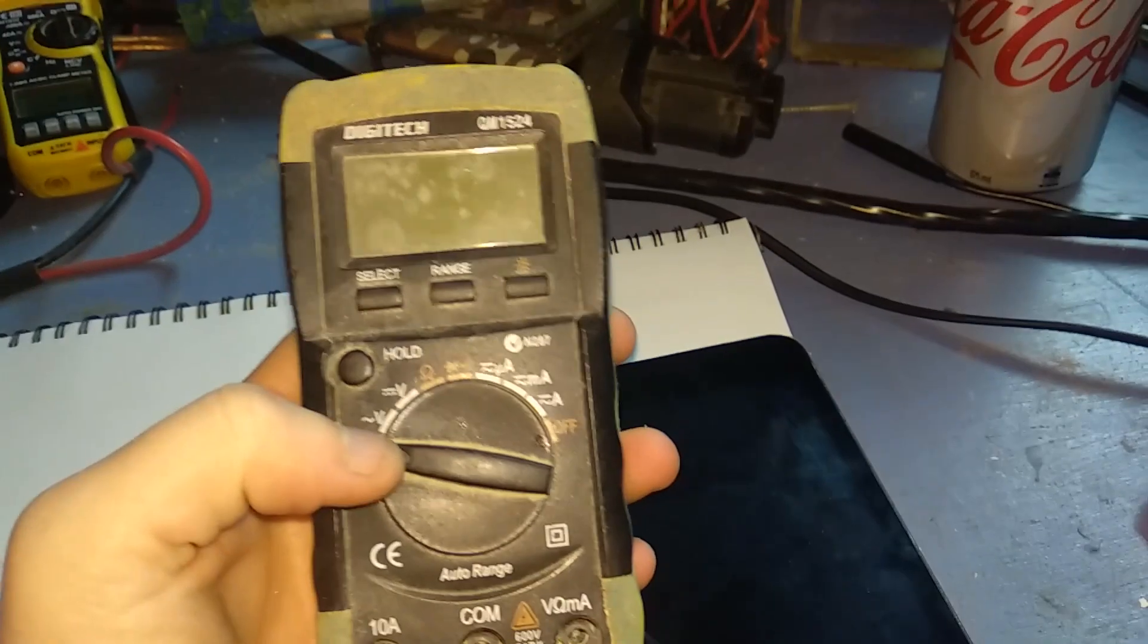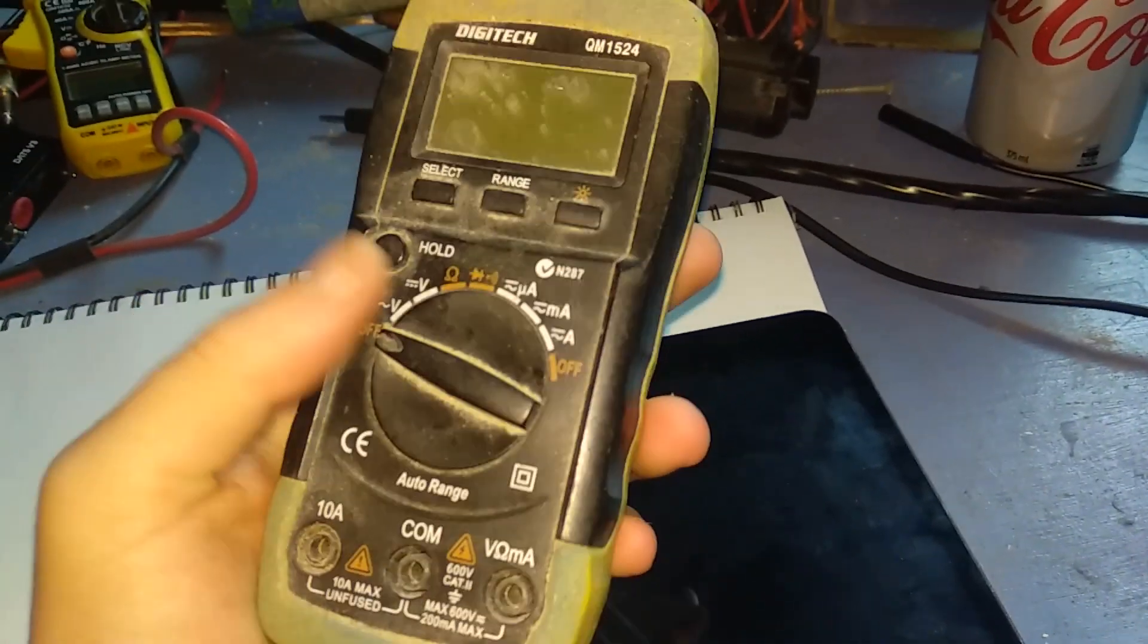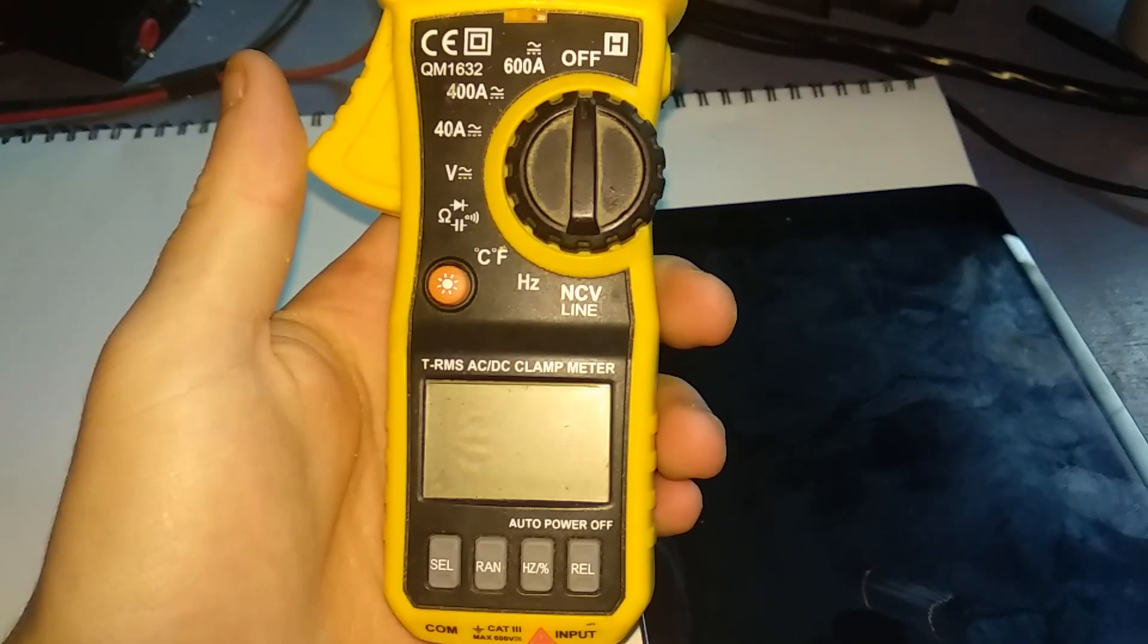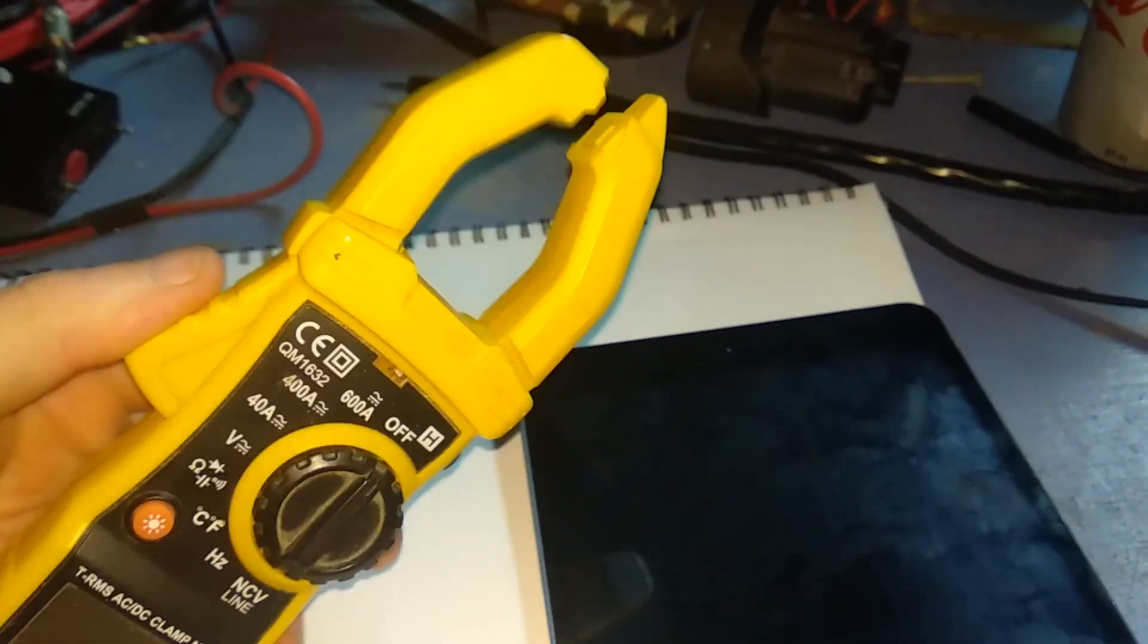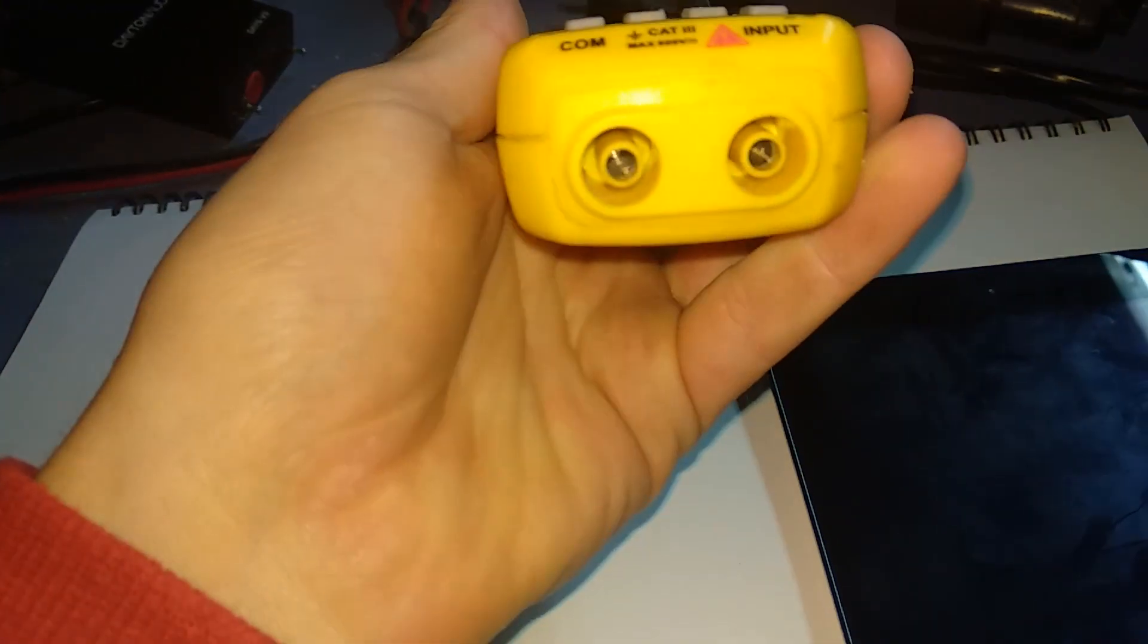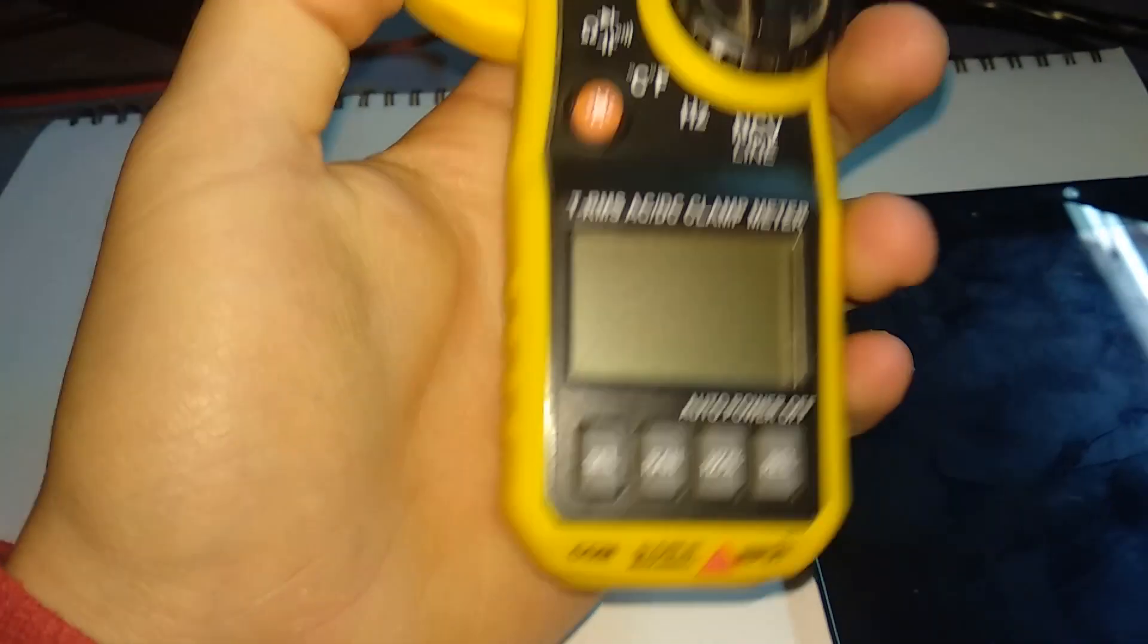Now for the next part of the test a multimeter like this one is perfectly suitable although since this one's got a pretty cruddy screen, instead I'm going to be using this one right here which is a clamp meter. I could measure the current using the clamp but as I'm doing an analog for a standard multimeter I'm just going to be using the voltage inputs right down the bottom.